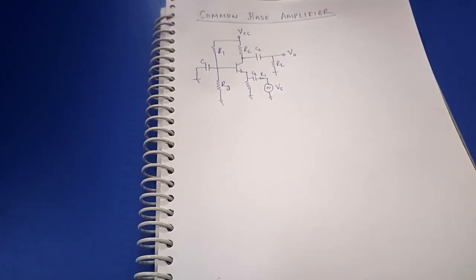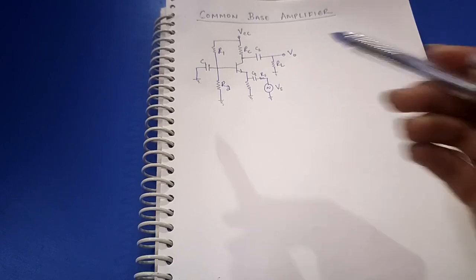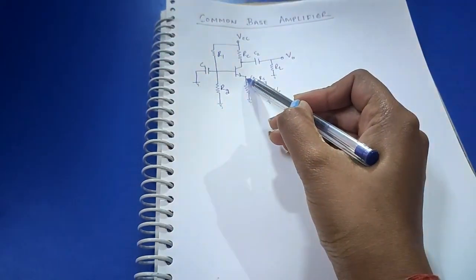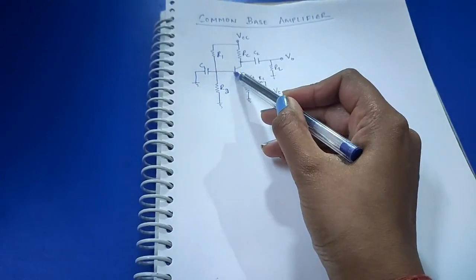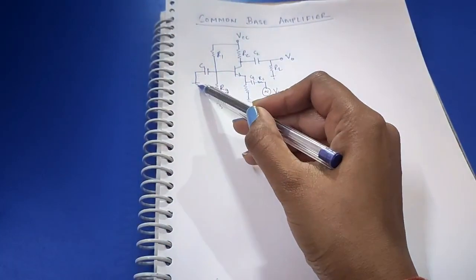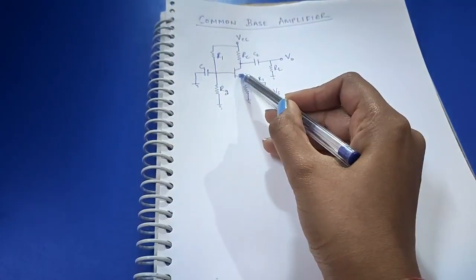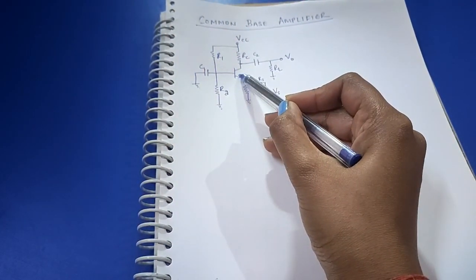Welcome back to the channel. Today's topic is the common base amplifier. In this configuration, the input node is the emitter terminal and the output node is the collector terminal. The base is basically grounded.